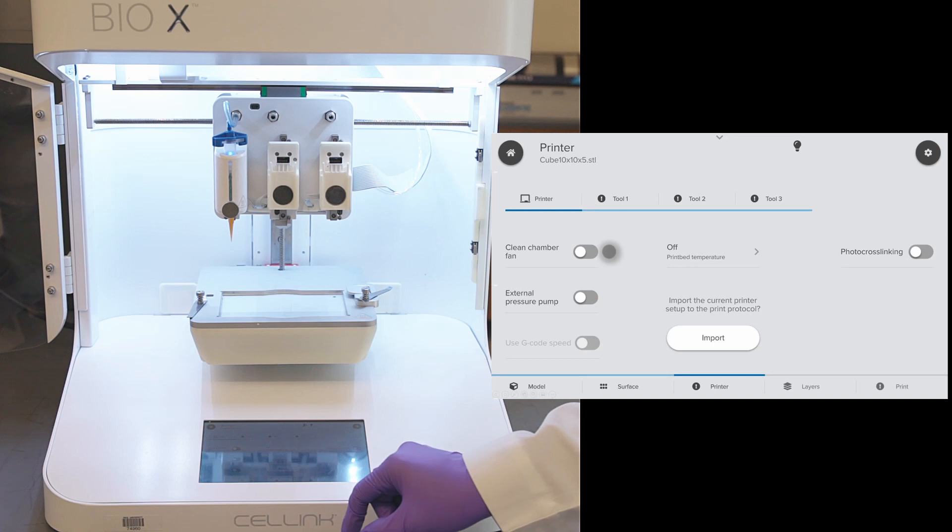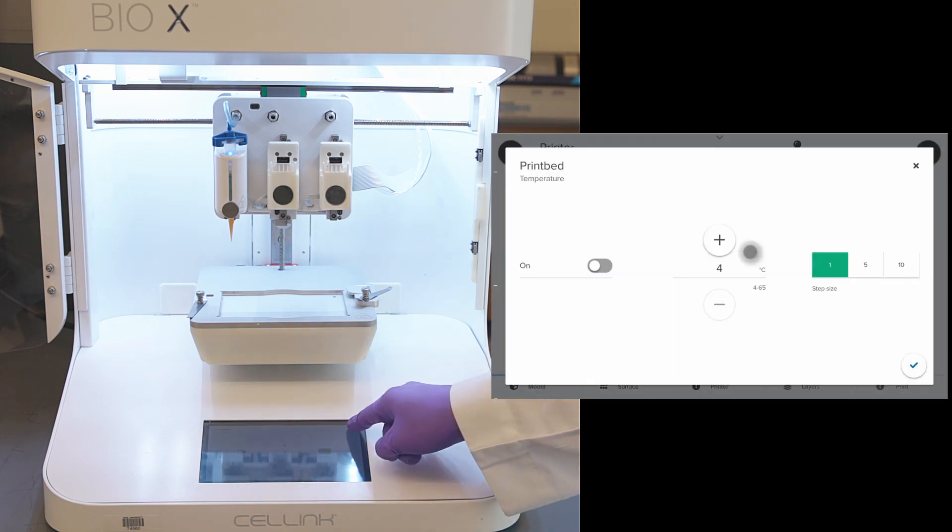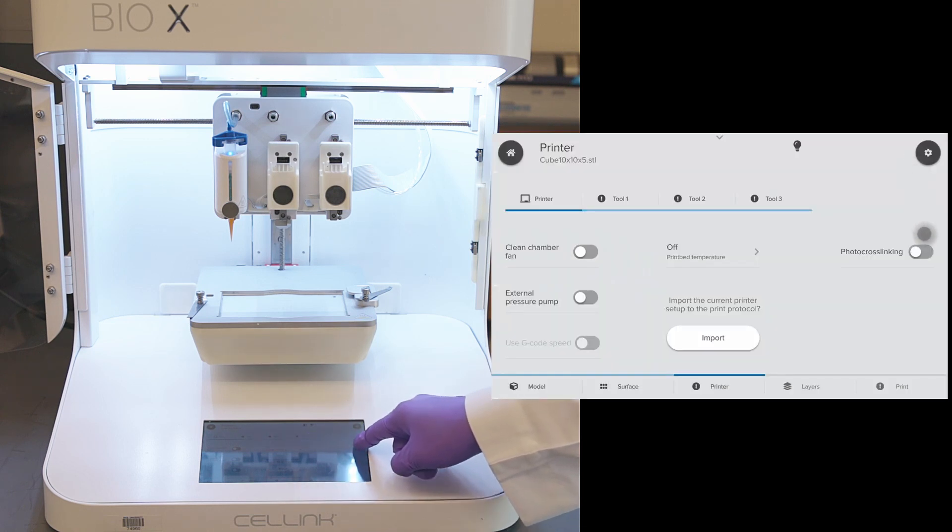Next is the printer. Here, we have the option to clean the chamber for sterile 3D printing, or if we are using an external pump to provide air pressure, option to heat or cool the print bed, and also for photo crosslinking. If you want to enable, you can choose the frequency and the position where the crosslinking happens. Today, we will not be needing any photo crosslinking. We have a UV photo crosslinking printhead for 405 nanometers if needed.